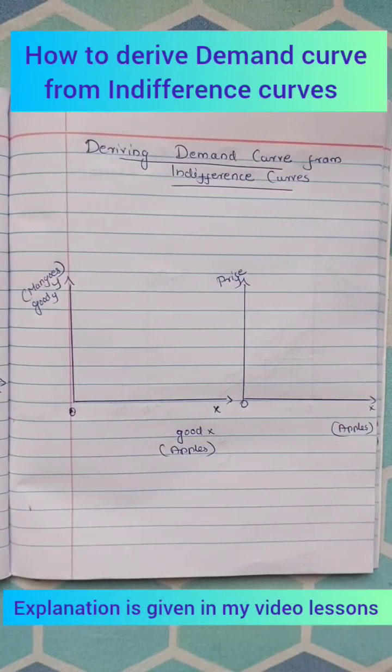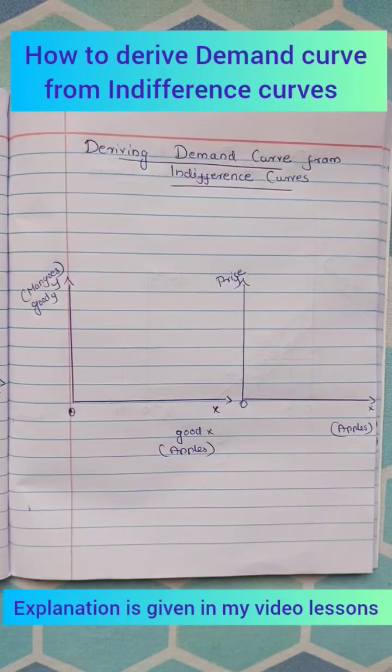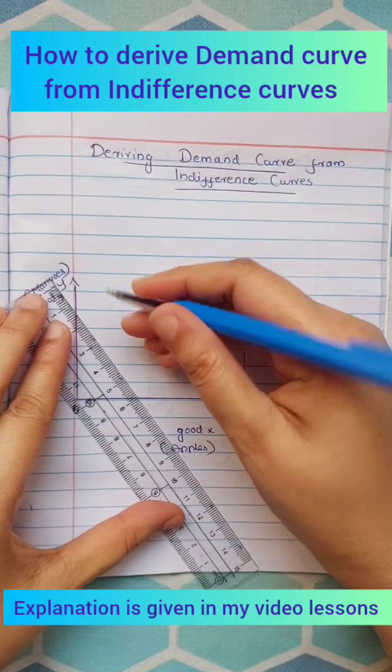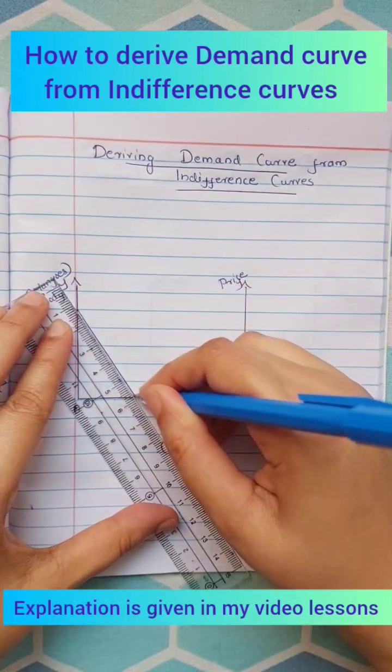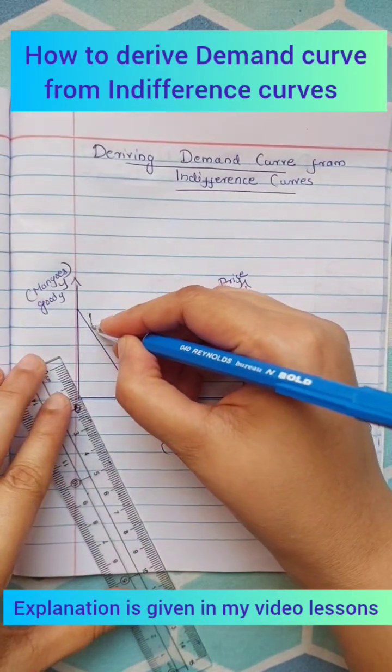How to derive a demand curve from indifference curves? In figure 1, x-axis shows the quantities of apples and y-axis shows the quantities of mangoes.